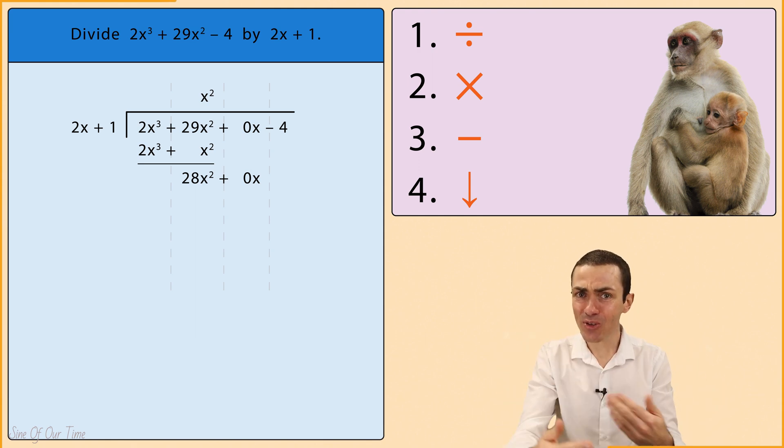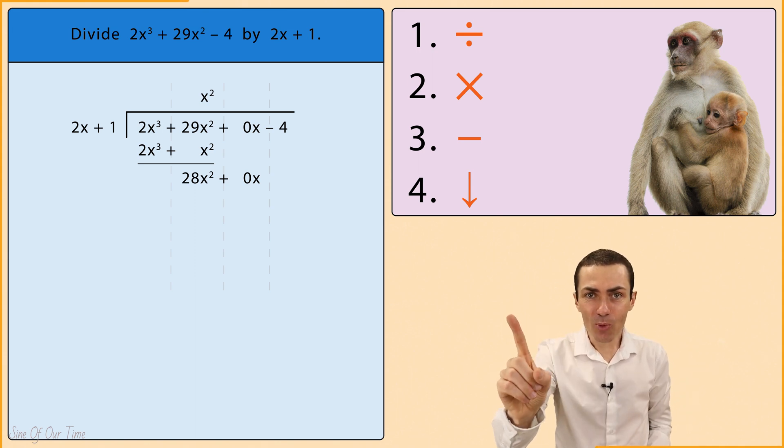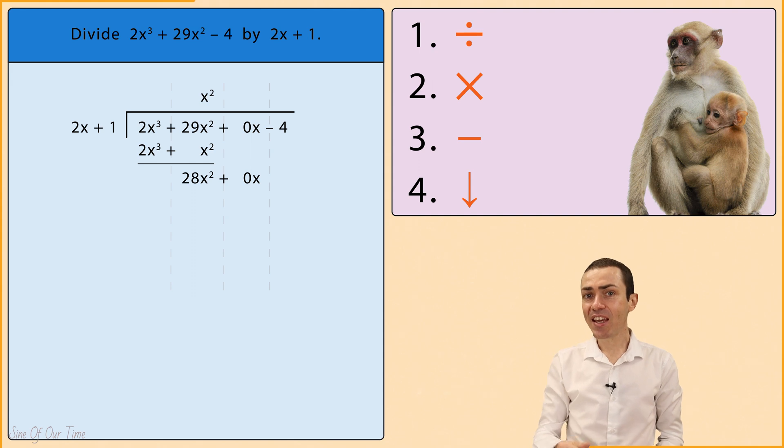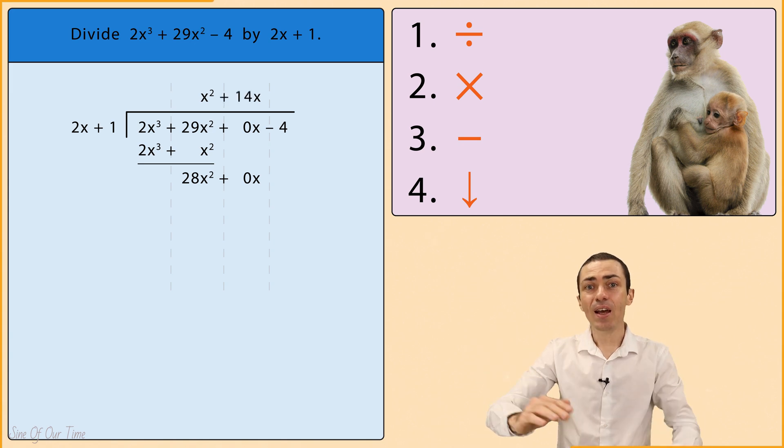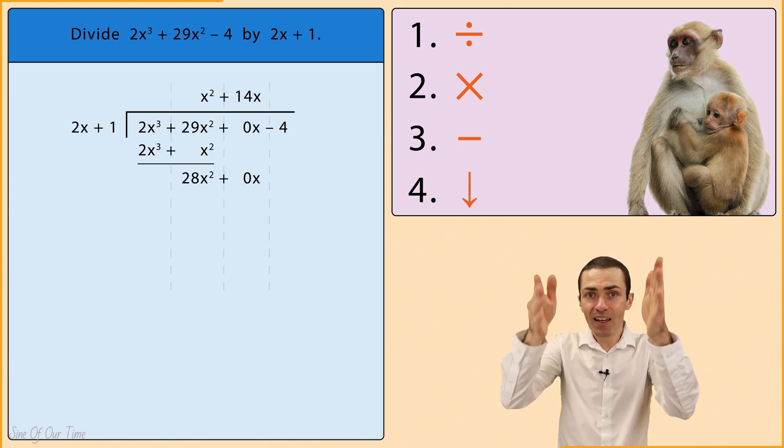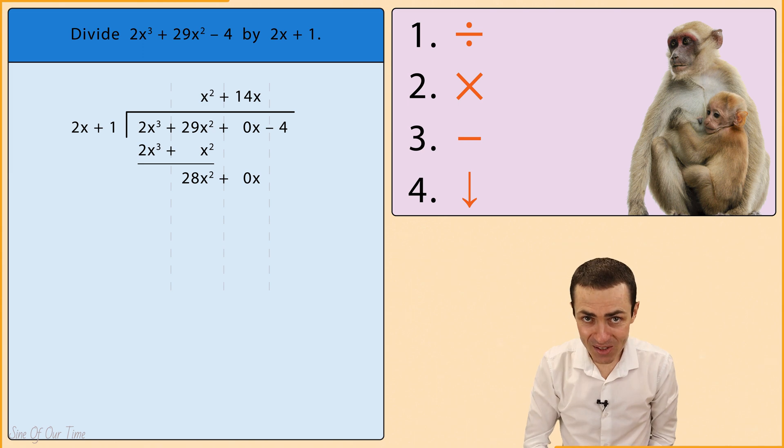In fact, we have to go through these steps all over again. So let's do it. Step 1: Divide. We take 28x squared and we divide by 2x in order to give us 14x, which we write above the long division symbol in the column reserved for x's.